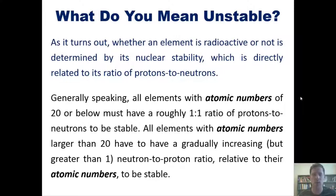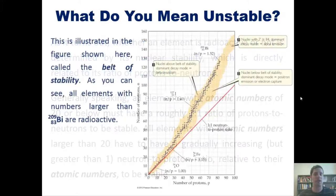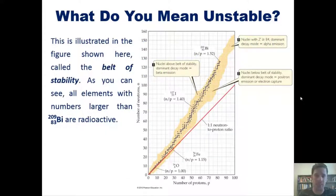Generally speaking, all elements with atomic numbers of 20 or below must have a roughly one-to-one ratio of protons to neutrons to be stable. All elements with atomic numbers larger than 20 have to have a gradually increasing but greater than one neutron to proton ratio relative to their atomic numbers to be stable.